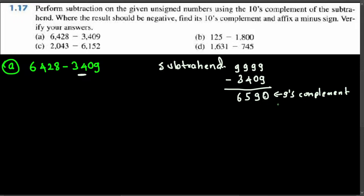This gives us the 9's complement: 0, 9, 5, 6. Now we are trying to find the tens complement. To find the tens complement, just add 1 to the 9's complement. Adding 1 gives us 6, 5, 9, 1 — and that is the tens complement of the subtrahend.